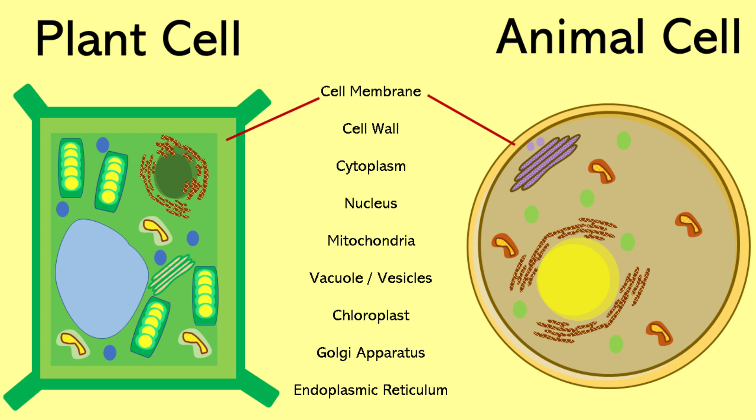Both plant and animal cells have a cell membrane. This is like a thin protective wall around the cell. It keeps everything inside safe and lets good things in while keeping bad things out. Unlike animal cells, plant cells also have a cell wall. A cell wall is a strong, rigid layer that surrounds the cell membrane. It provides structural support and protection, helping the cell maintain its shape.